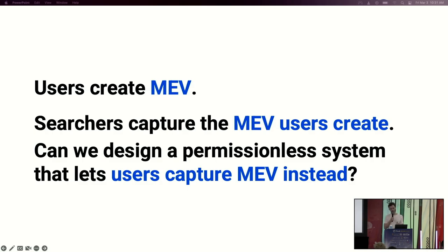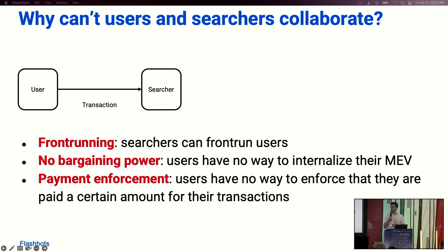This is quite difficult because a user interacting directly with a searcher introduces all kinds of risks. You send your transaction to a searcher and they might front-run you — you're not going to get money kicked back, you'll get worse execution. There's a risk of being front-run. Even if you're sending to someone you trust, there's no guarantee you can internalize your MEV because you don't have bargaining power just by sending your transaction to them. And even if a searcher is willing to pay you, a builder could front-run them and take your payment. You need payment enforcement here.